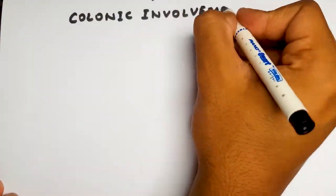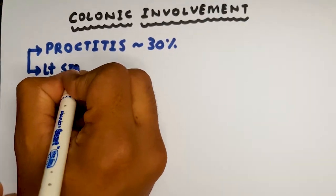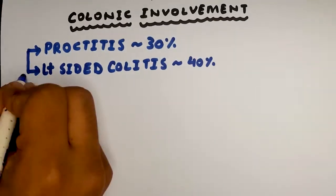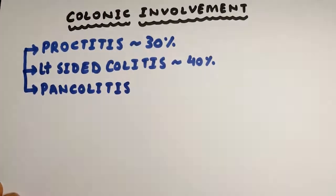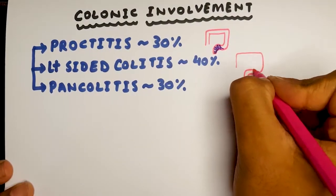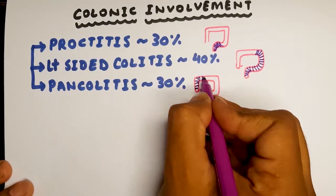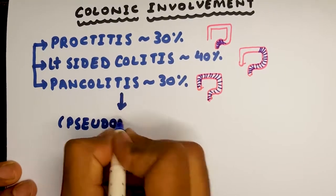Since ulcerative colitis means there's only colonic involvement, incidental findings show that proctitis occurs in 30% of patients, left-sided colitis in 40% of patients, and pancolitis in 30% of patients. Pancolitis is particularly important as that is the one which results in pseudopolyps forming.